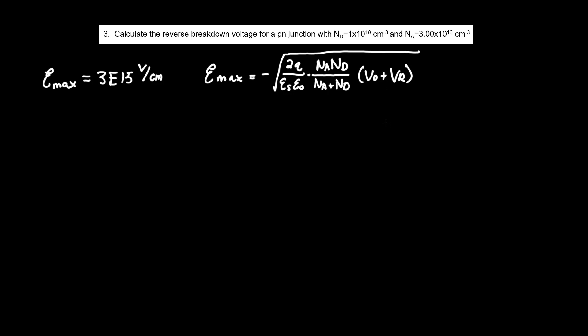We're going to have to do a few algebraic rearrangements to this equation. For starters, we want to get rid of this negative term here. The simplest way of doing that is by squaring both terms, thereby creating a positive term on the right-hand side. So now epsilon squared max equals 2Q over epsilon S epsilon naught times NA ND over NA plus ND times V0 plus V breakdown.